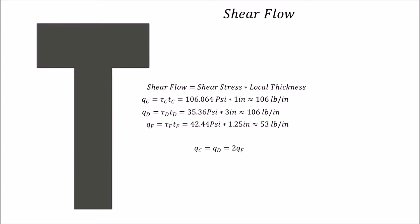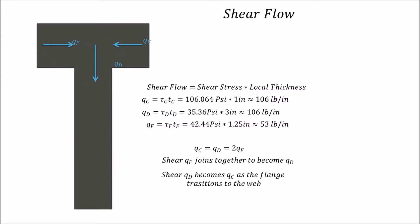It's clear that q_C equals q_D, and both are double the size of q_F. This makes logical sense: the shear flow q_F flows in from each side of the flange, joining in the middle to become q_D. Then q_D flows down through the flange into the web and becomes q_C as it moves through the rest of the cross section. This problem showed how tau = VQ/It can calculate both shear stresses and shear flow in a cross section.